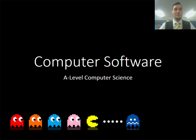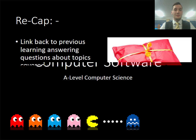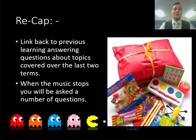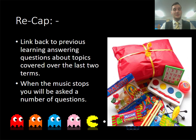To recap from the beginning of the lesson, the topics we covered include the CPU and networks. Some areas you need to work on are the von Neumann architecture, and you also need to remember to explain the difference between the von Neumann architecture of the CPU and the Harvard architecture. If this is an area you're still struggling with, we need to go back over this and there will be more notes recorded in the future.